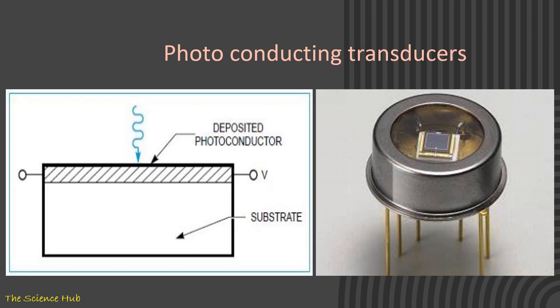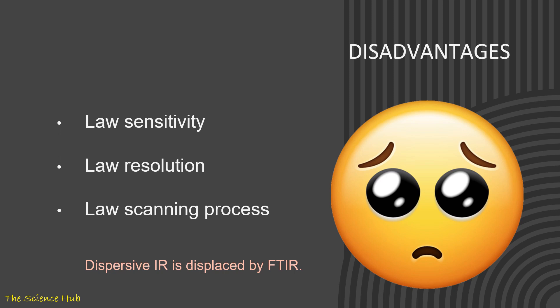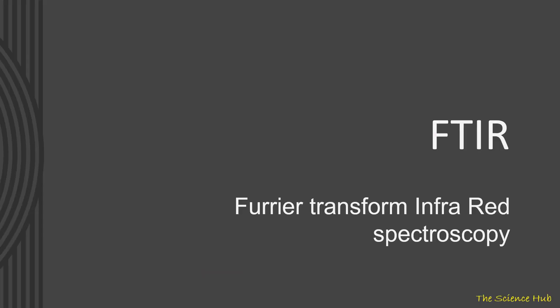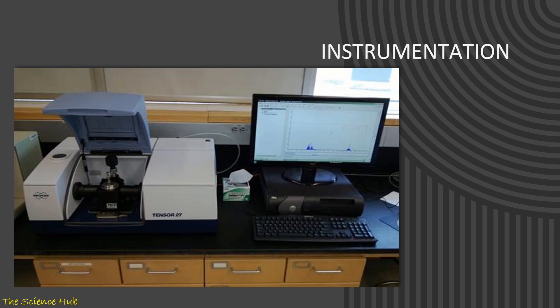There are various disadvantages of IR spectroscopy like low sensitivity, low resolution, low scanning process, and because of that, dispersive IR is displaced by FTIR spectroscopy. So we come to FTIR. FTIR stands for Fourier Transform Infrared Spectroscopy. Here you can observe the instrument of FTIR.